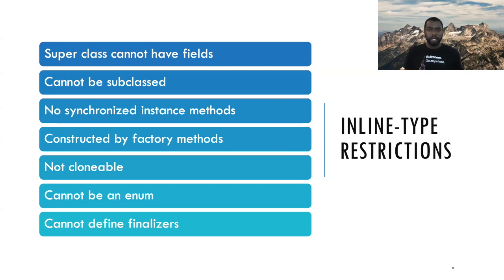Since inline types are identityless, you can't perform any identity operations on them, like synchronizing on them or defining instance synchronized methods. Inline types also do not implement Clonable since inline types are identityless. Cloning is inconsequential. It's like trying to clone a primitive. Similarly, they can't define finalizers since finalization is a mechanism tied to the lifetime of an instance. And since inline types don't have identity, they don't have lifetimes. So the concept of finalization doesn't work with inline types.